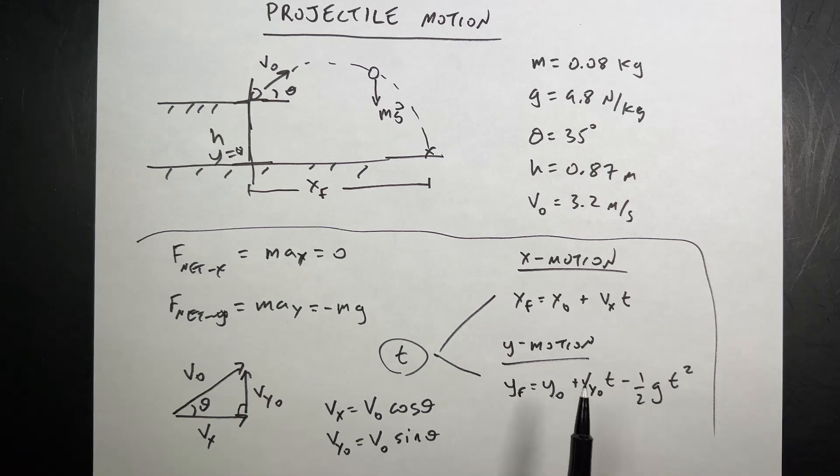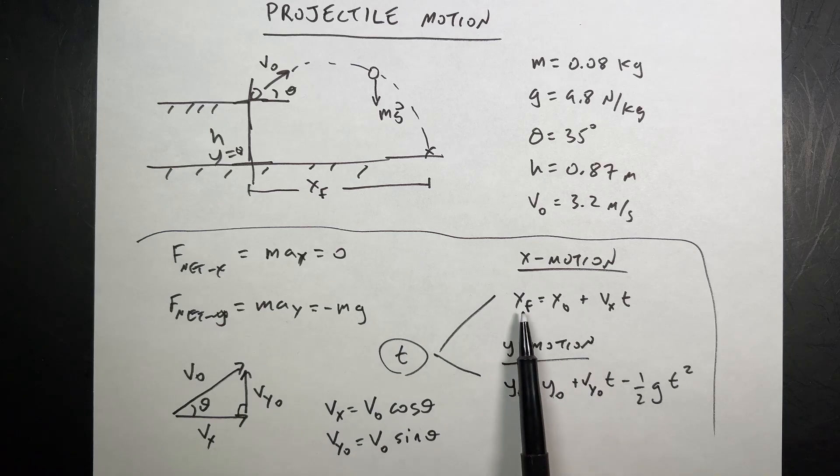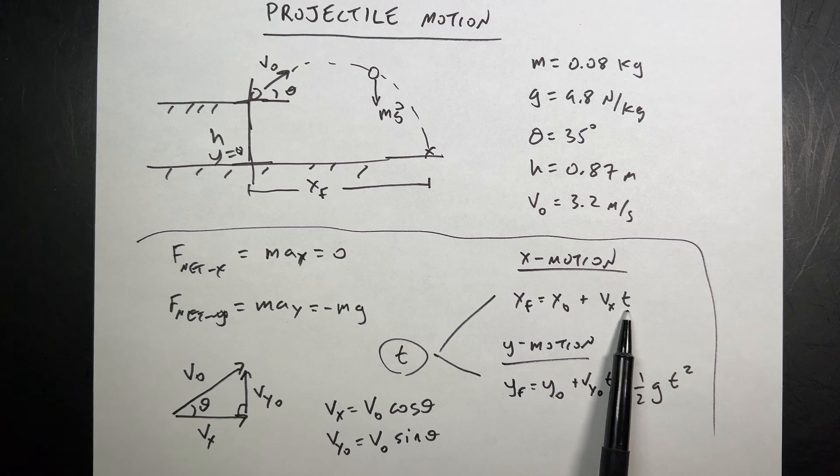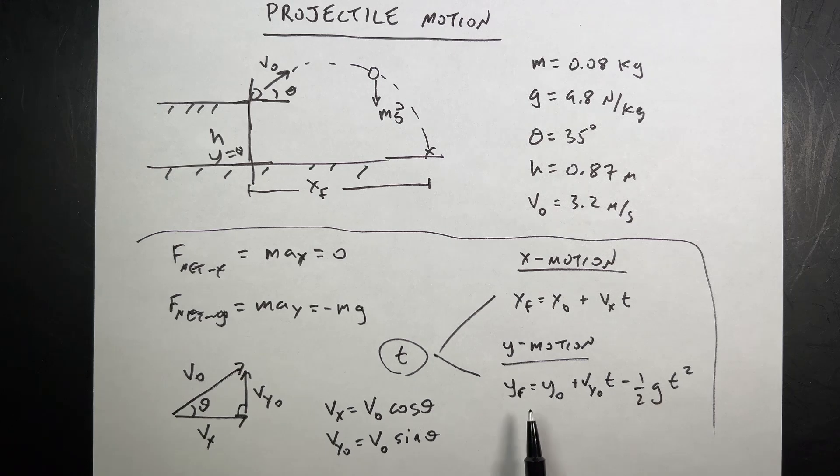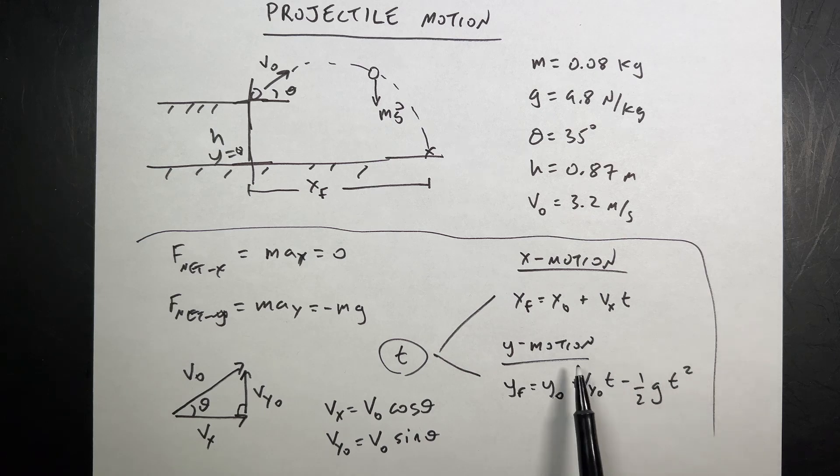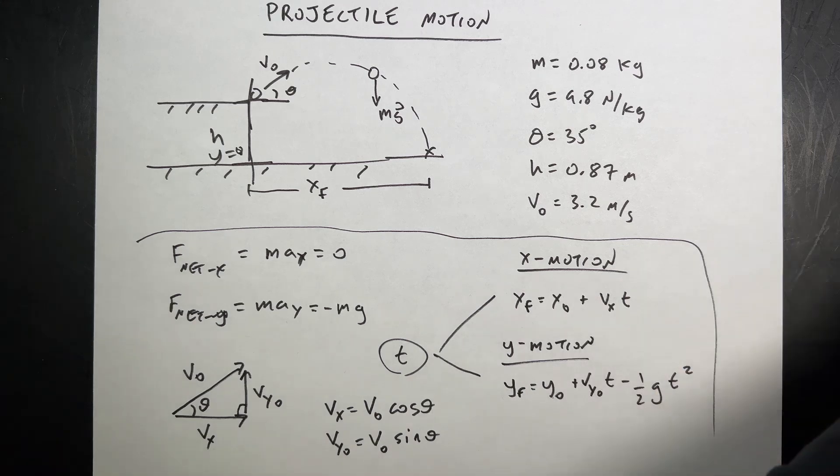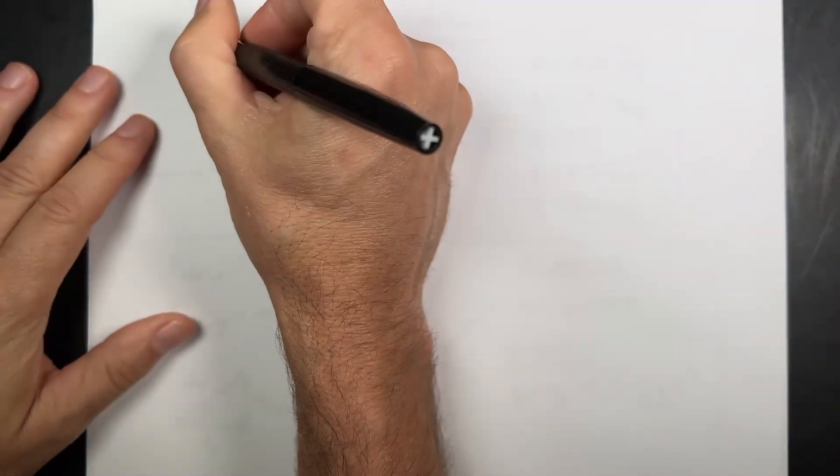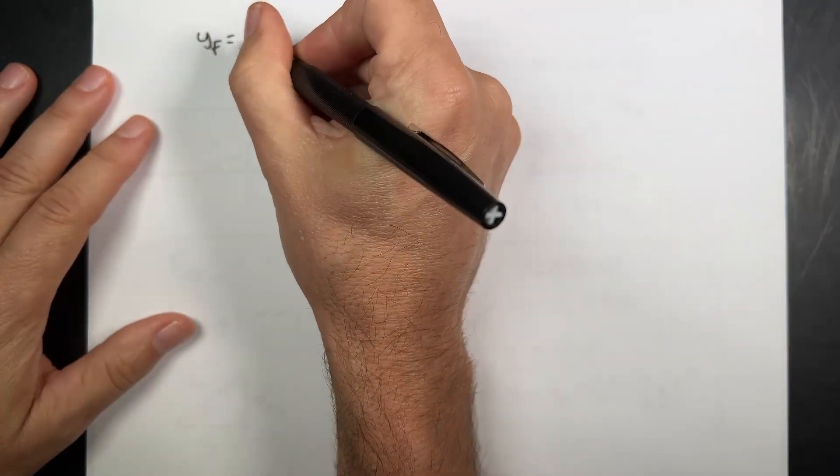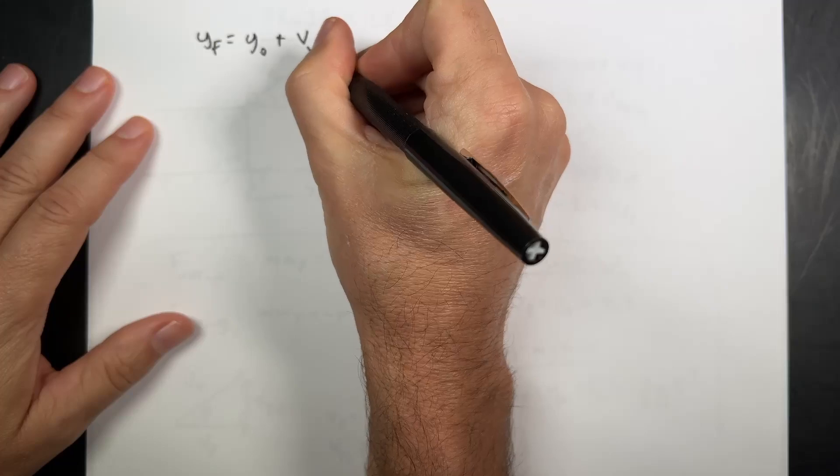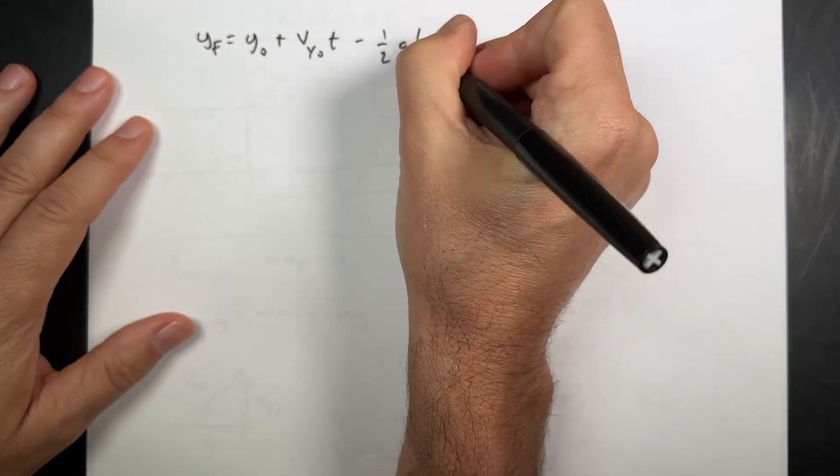Now, which one of these could I solve for time? Well, if I don't know xf and I don't know time, I have two things I can't solve for here. But if I go down here, because I know the final position, I mean the initial position, the initial velocity, I only know one thing. There's only one thing I don't know here, the time. Okay. So we're going to use this to solve for the time and then we'll plug it in up there. Let's jump over to another sheet of paper and write down.